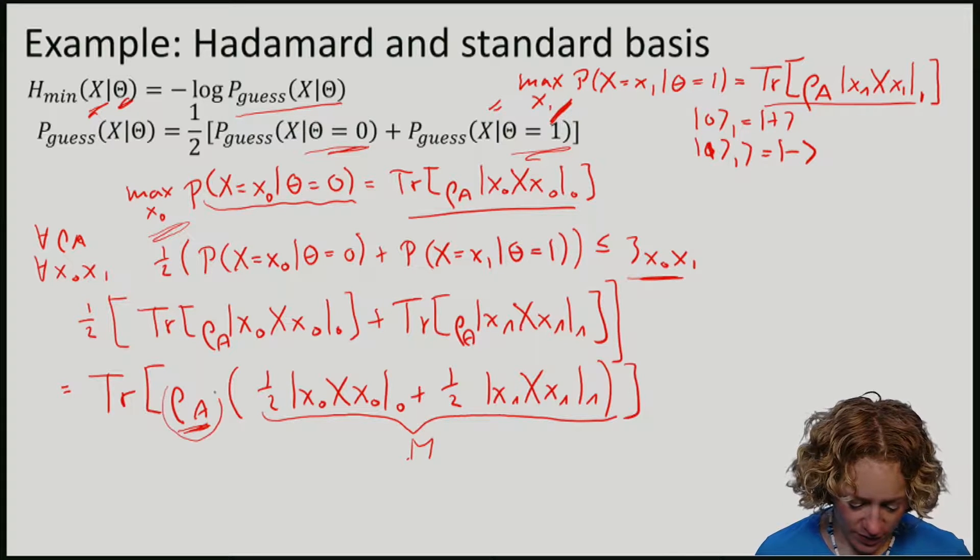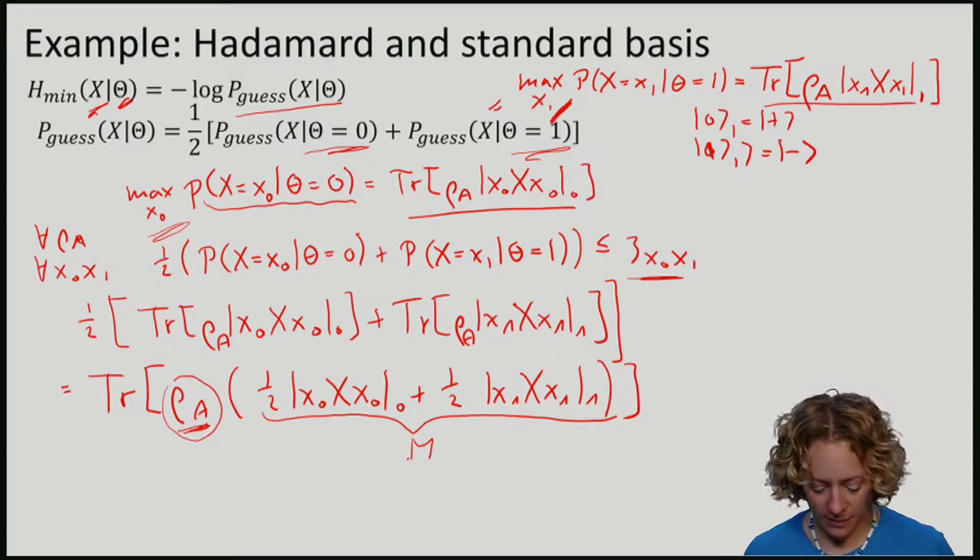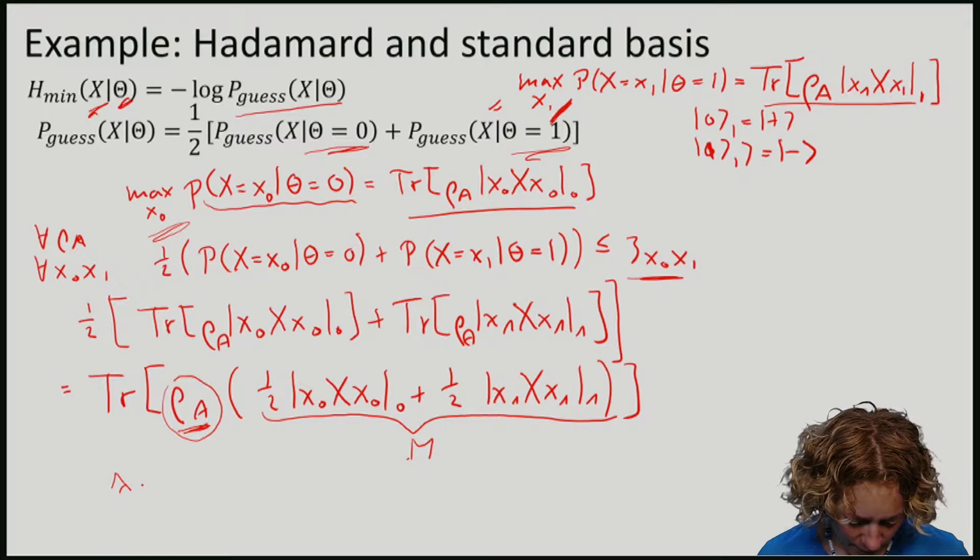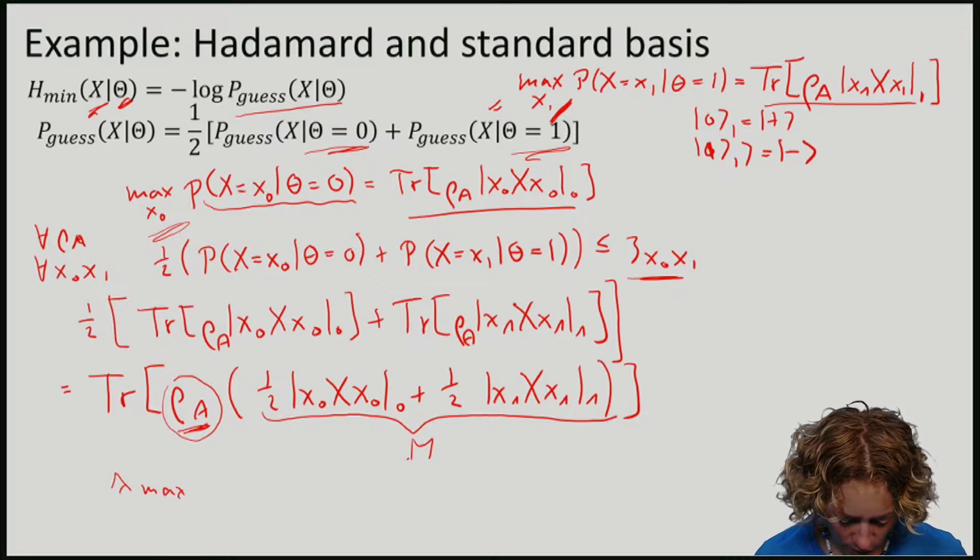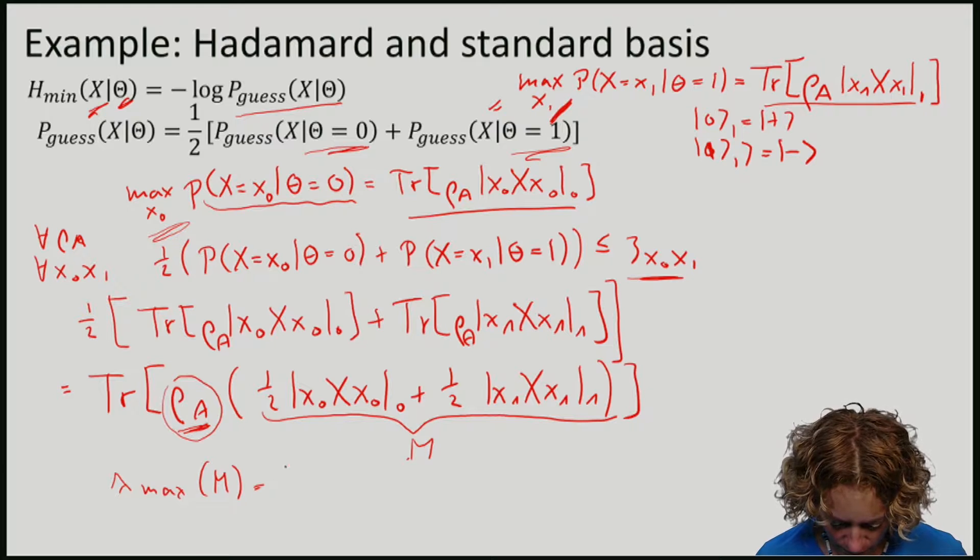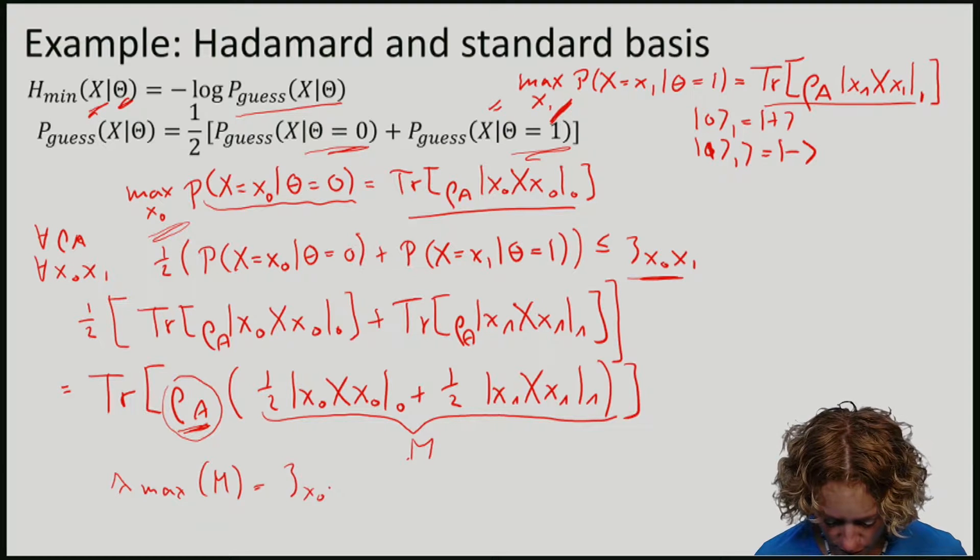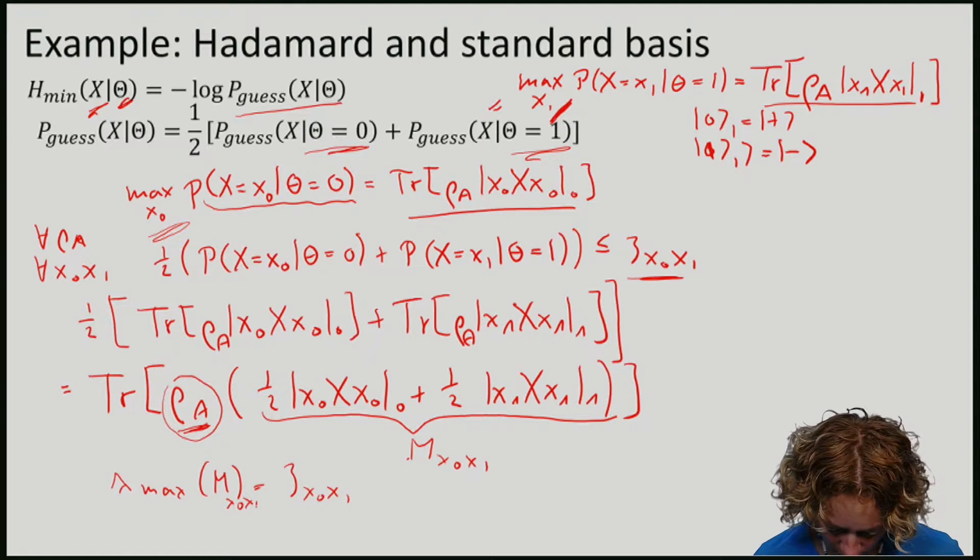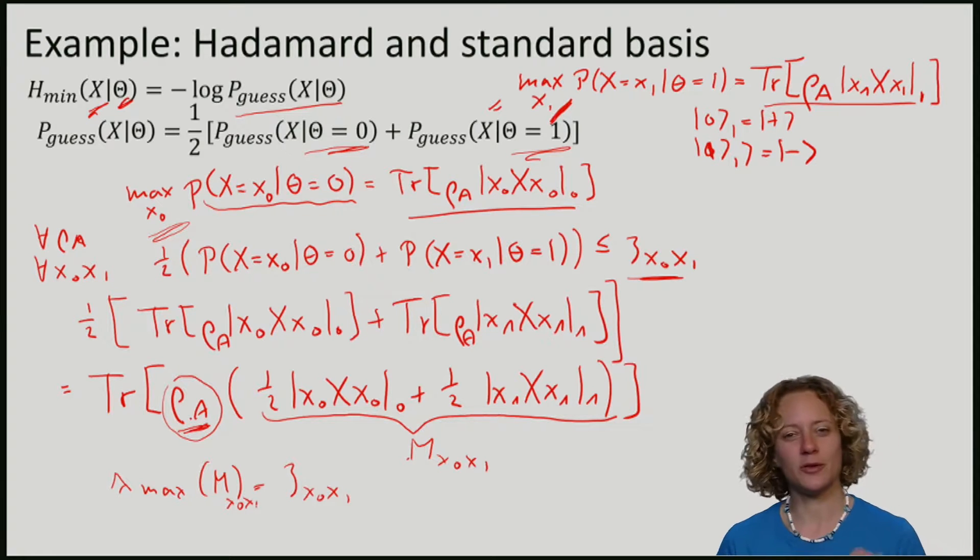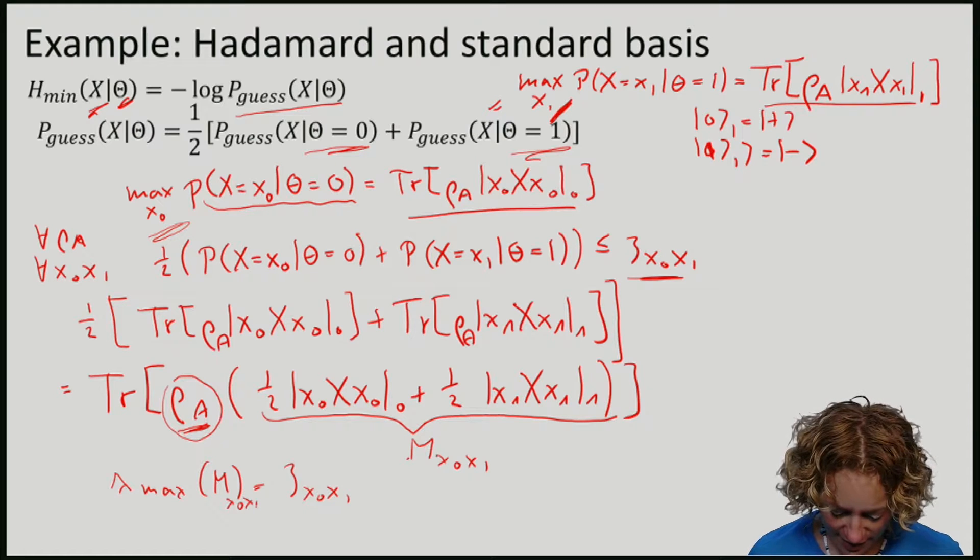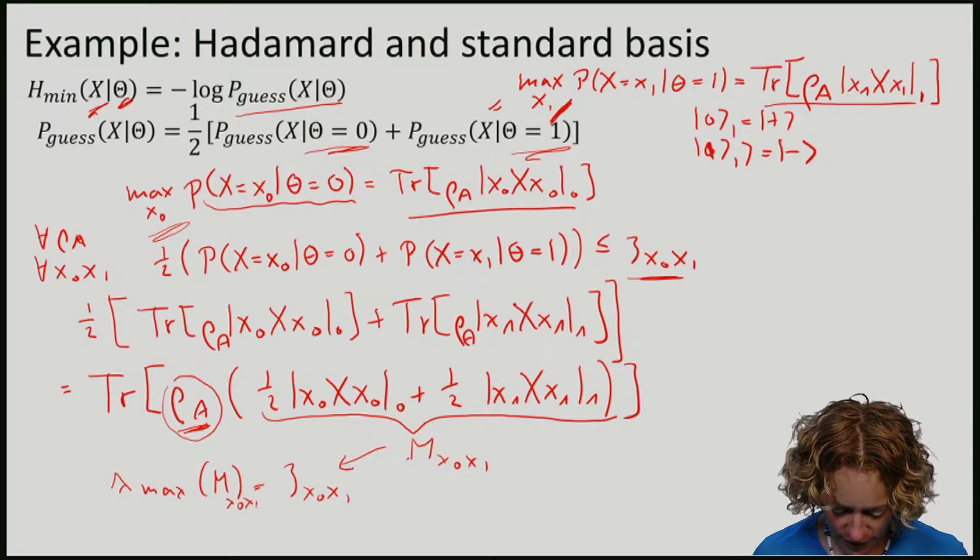In terms of the state rho A, this means that the largest eigenvalue, let me call it lambda max of M, will give me here X0 and X1. Of course, M might also depend on X0 and X1. And the state rho A that Eve could prepare to actually attain that value is just the eigenstate of M corresponding to that eigenvalue.